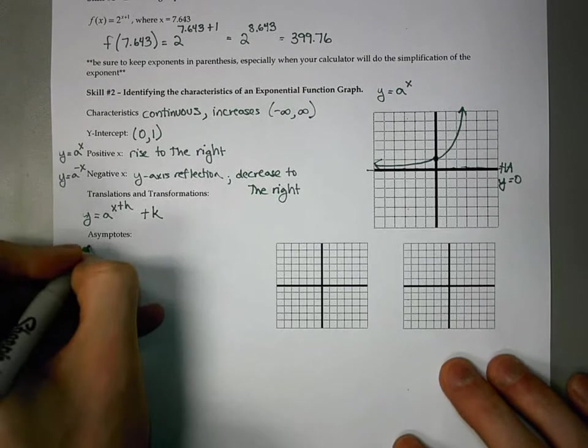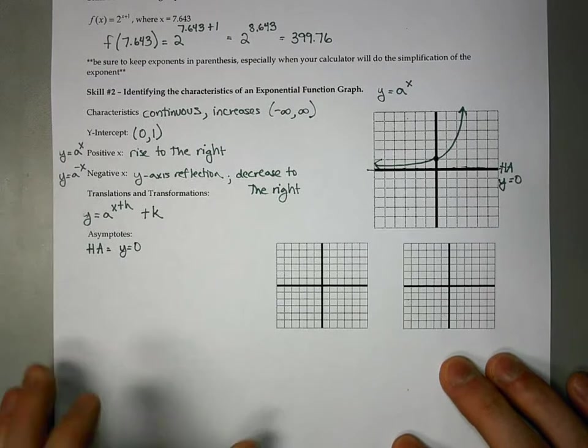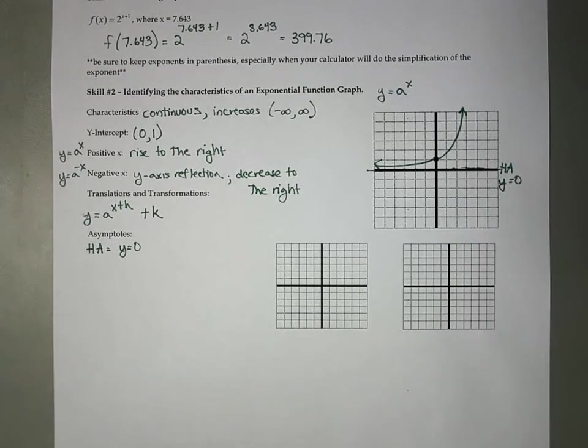And then finally, in terms of asymptotes, we've got a horizontal asymptote as y is equal to 0, and that's the case for the parent functions.